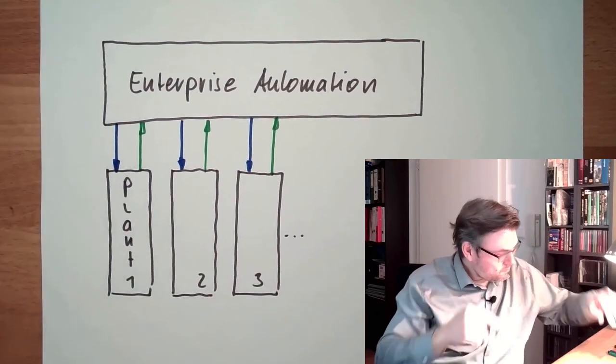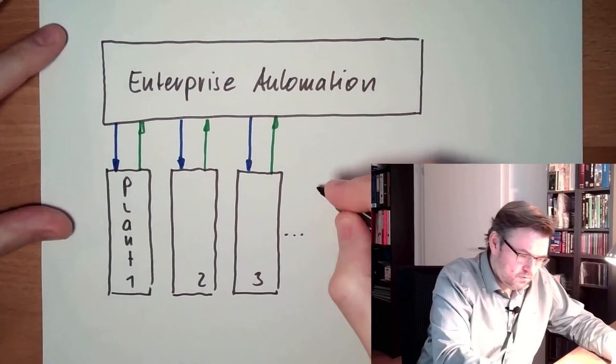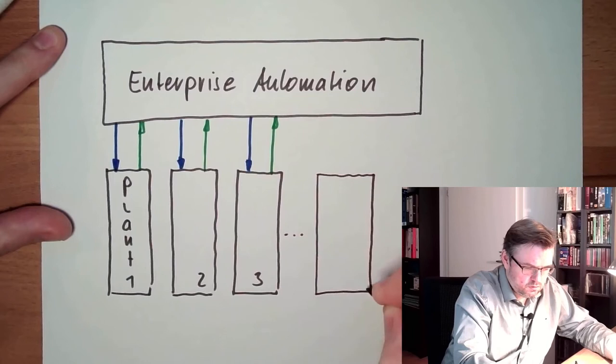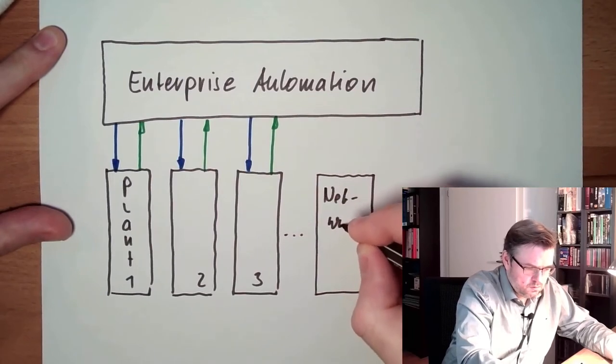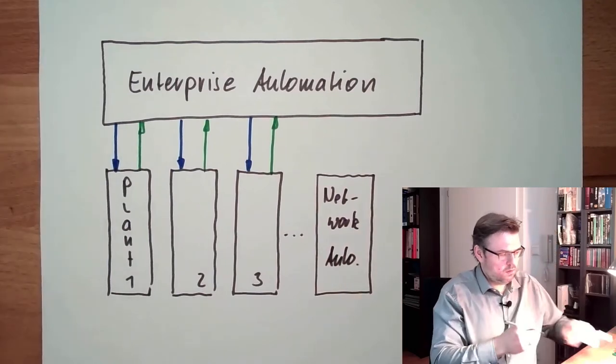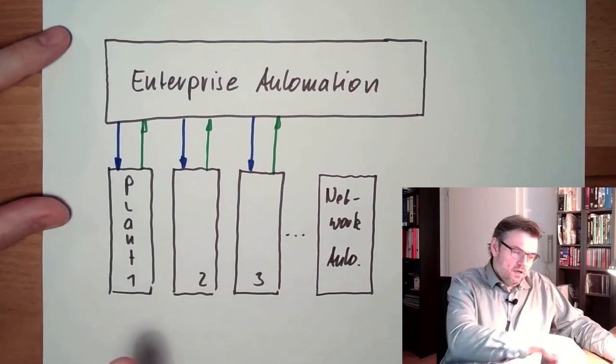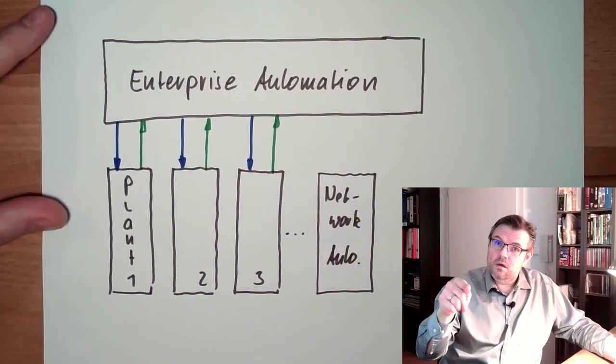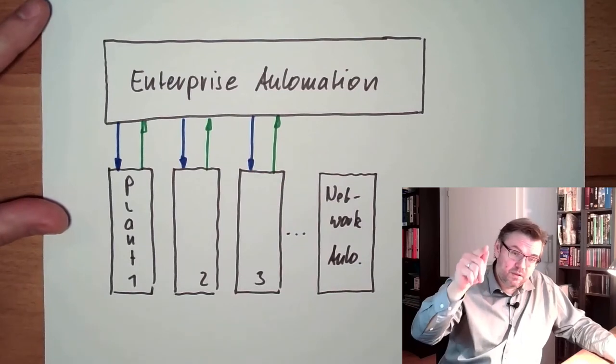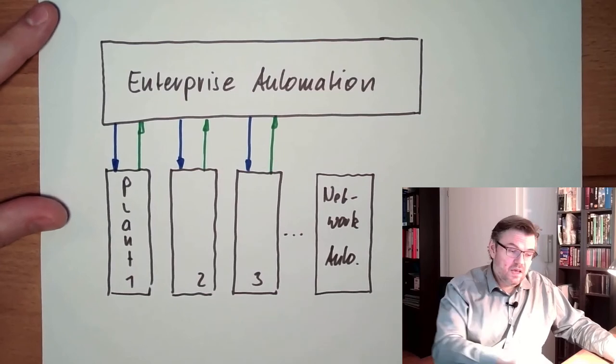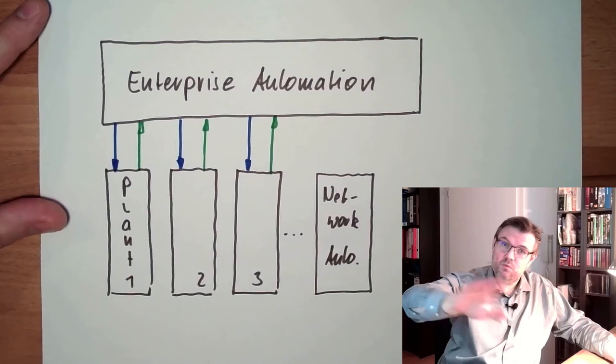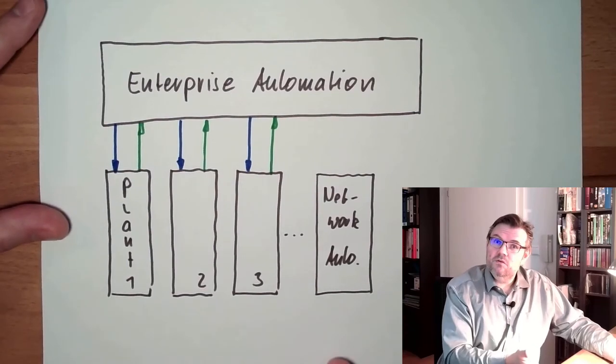Because then there is also the network automation. Just because I have a unit which could produce power does not mean I can produce power, because if the line, the particular line where the unit can be switched to, is already full of load, cannot transport more energy, then this power is useless.